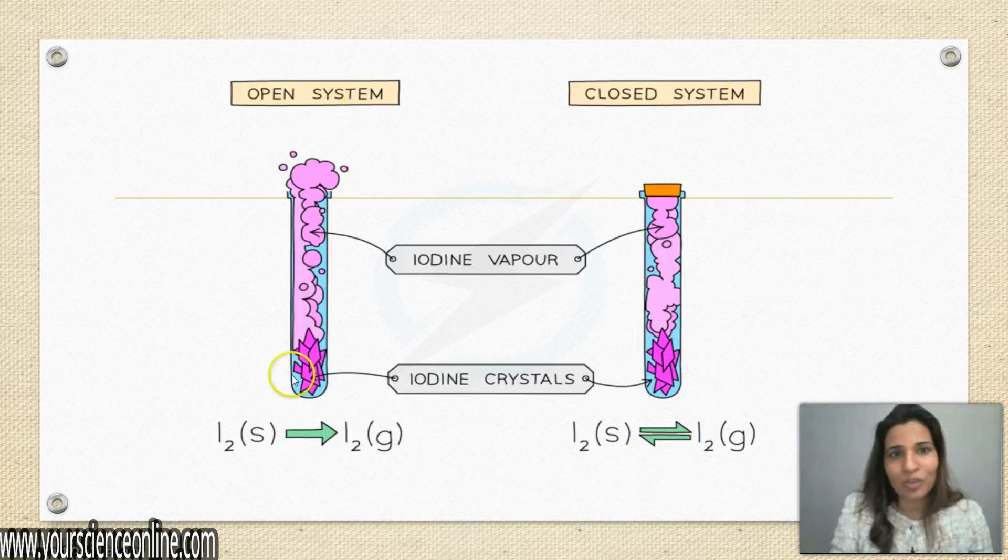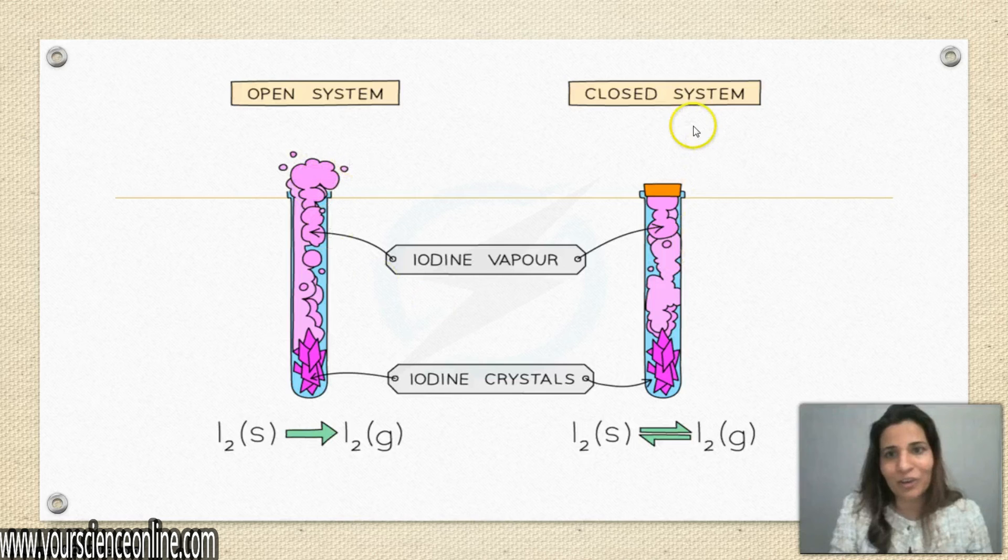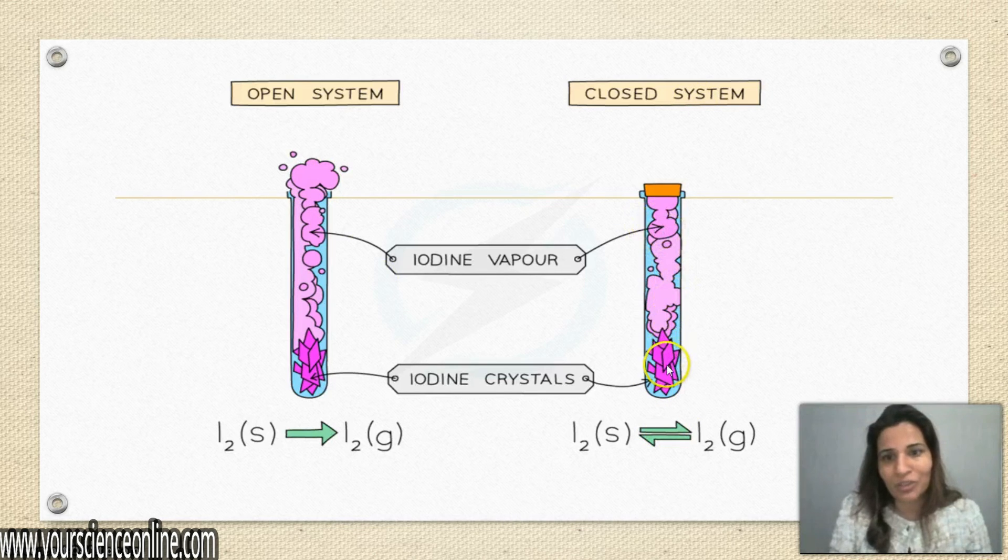In an open system, you cannot show equilibrium because you never know how much product has escaped. In a closed system, you already know the product which is formed is being converted to reactants.